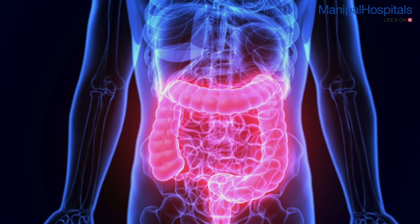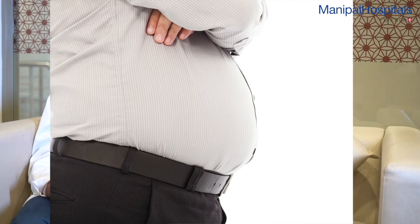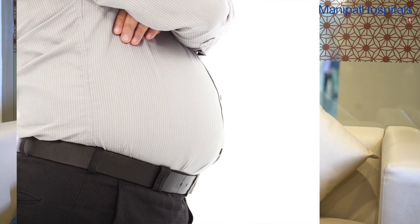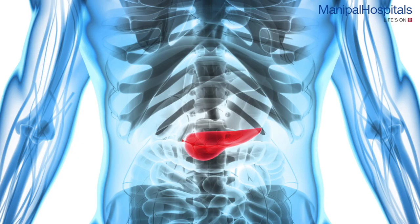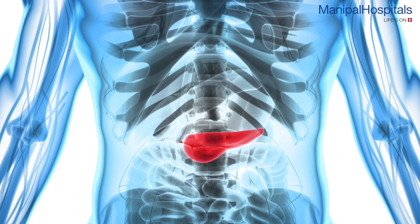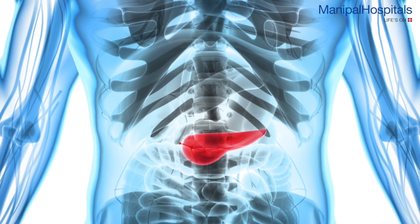We will see what exactly pancreatitis is, why it happens, how to diagnose it, and what treatment options are available. The pancreas is an important organ in the abdominal cavity which helps with two things: digesting whatever you eat, and producing insulin which controls glucose balance in the body. When there is swelling in this organ, the pancreas, we label it as pancreatitis.